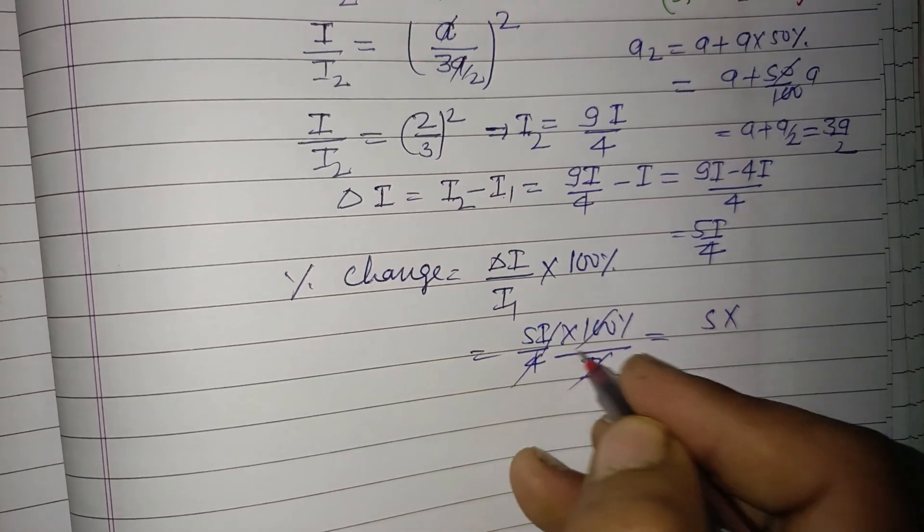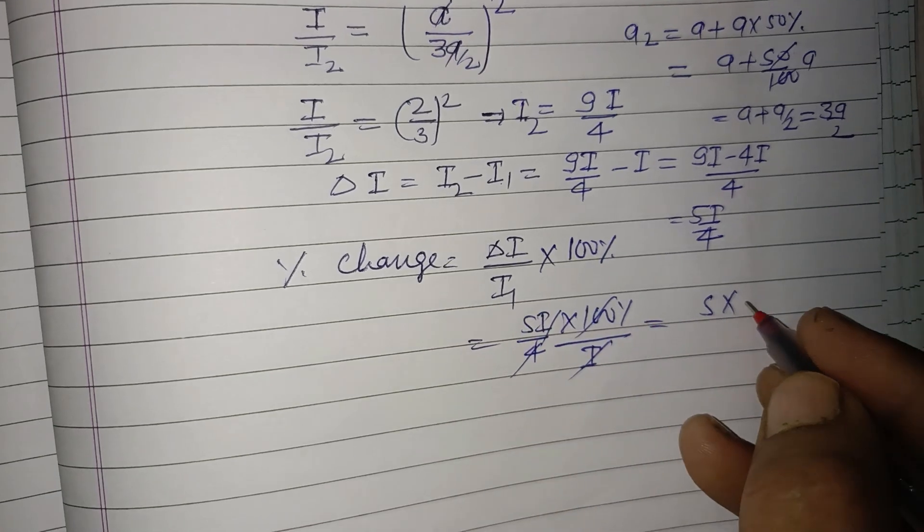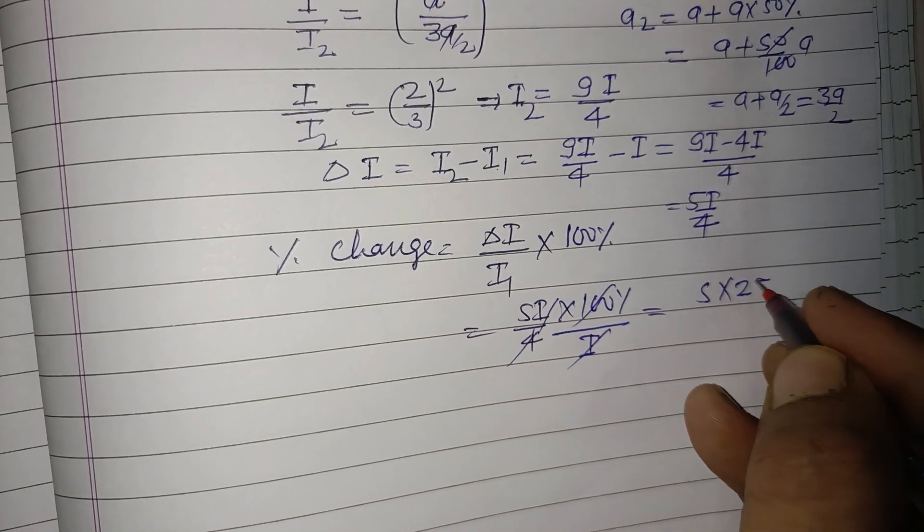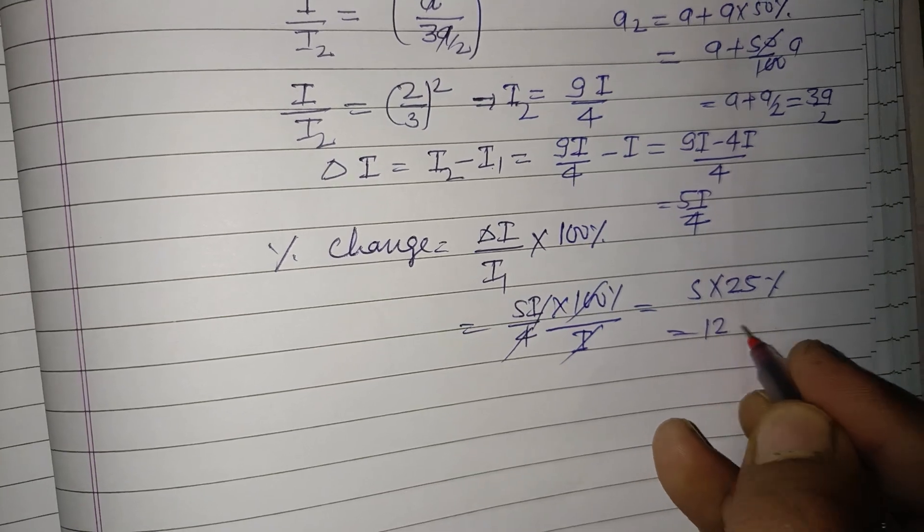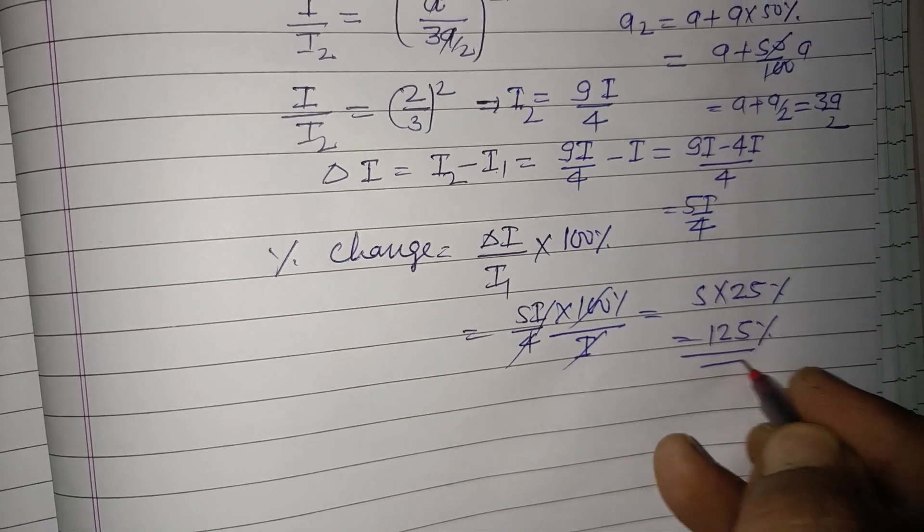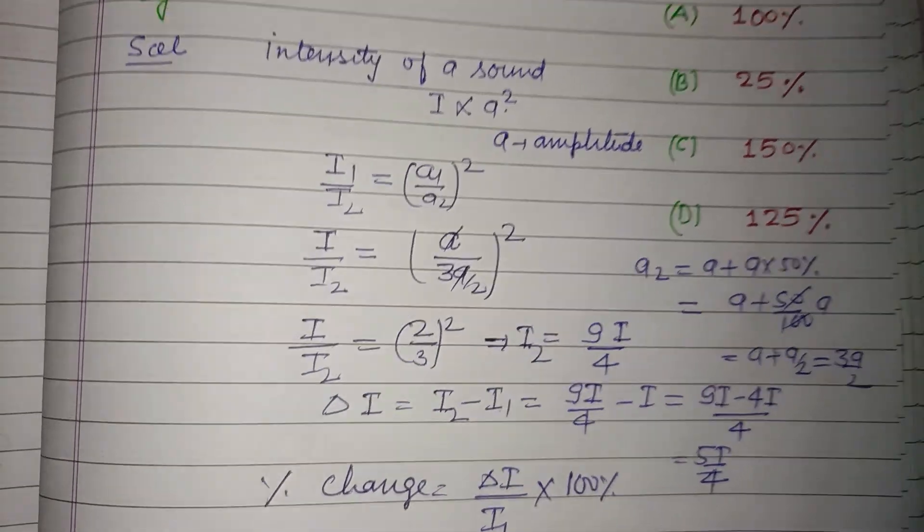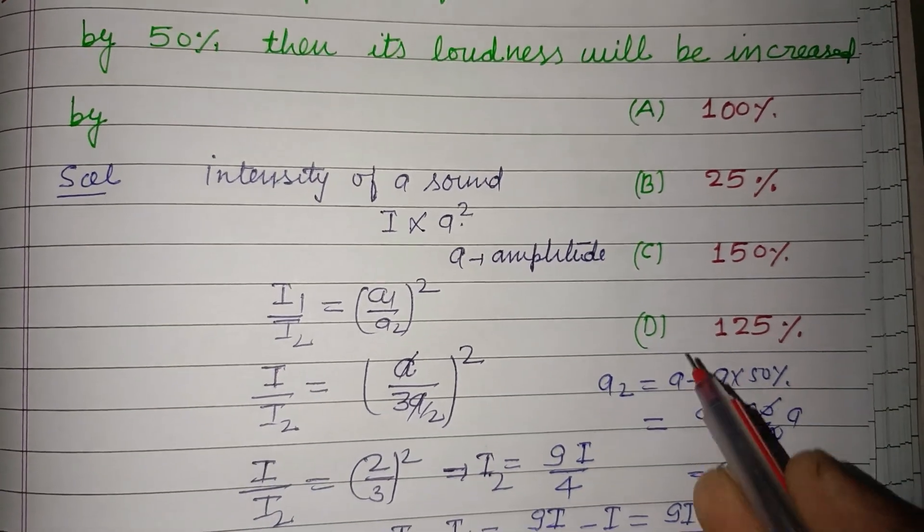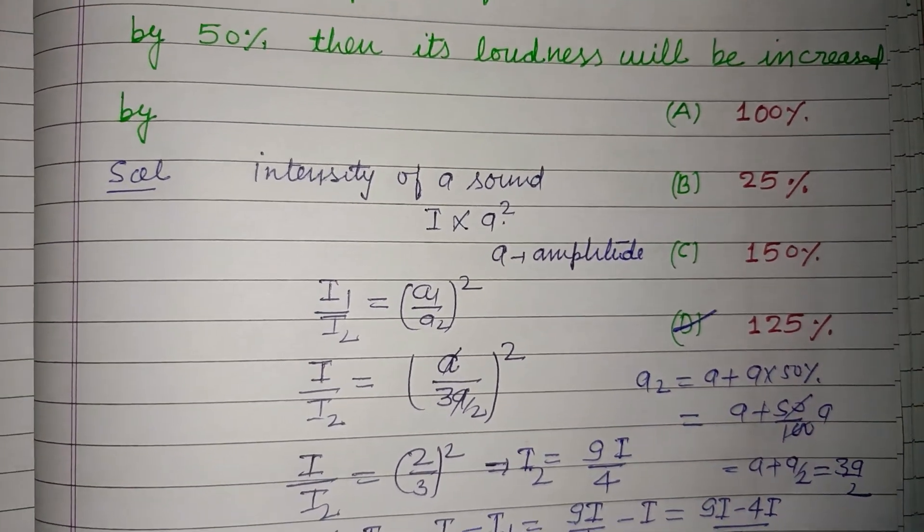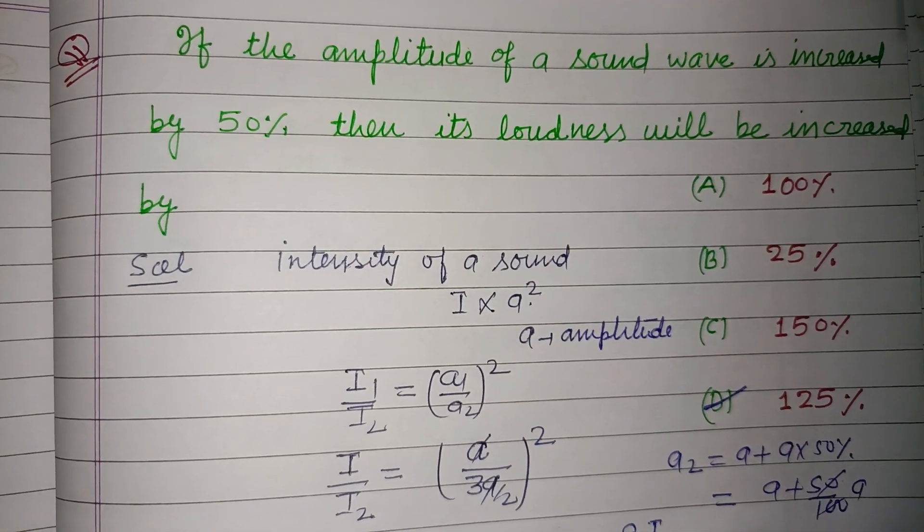5 times 100 divided by 4 equals 125%. So the percentage change in loudness is 125%, which is found in option D. Option D is correct. I hope you got it, please like the video and subscribe to the channel. Thanks for watching.